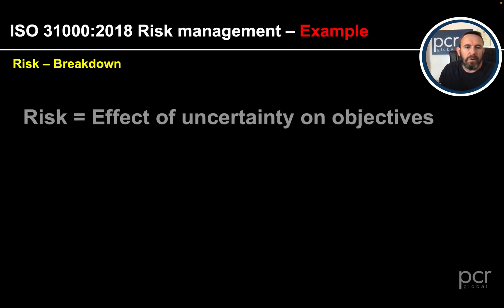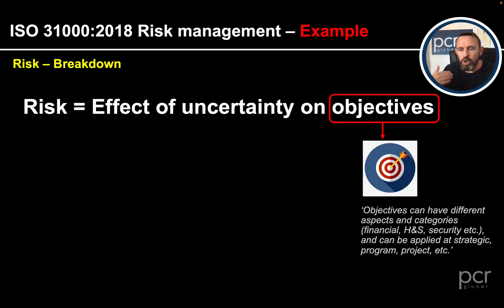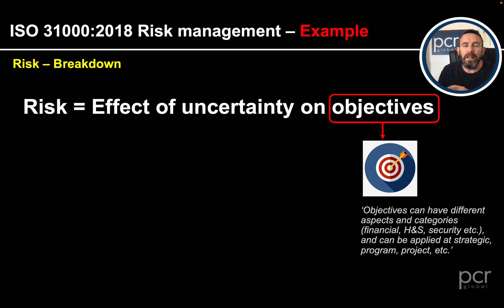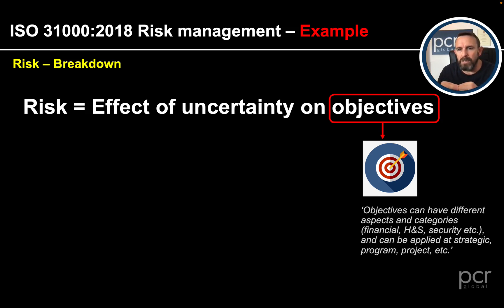Breaking risk down: in ISO 31000, risk is the effect of uncertainty on objectives. Within the definition it says that objectives can have different aspects and categories — they could be financial, health and safety, security, etc. — and they can be applied at various levels, whether strategic, tactical, or operational.